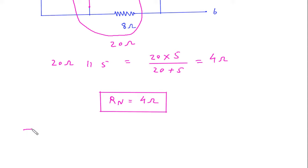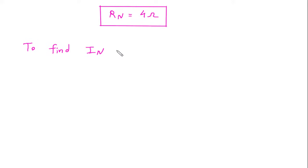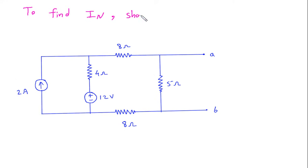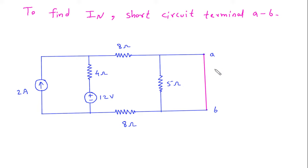Now we have to find In. To find In we will short circuit terminal AB. So this will be short circuited and this will be our current Isc or In. Now as we can see that this 5 Ohm resistance is short circuited, so this will be 0.